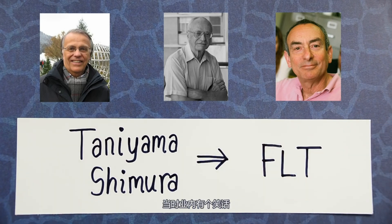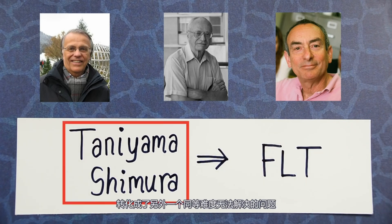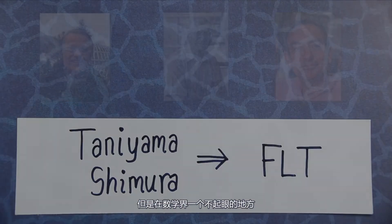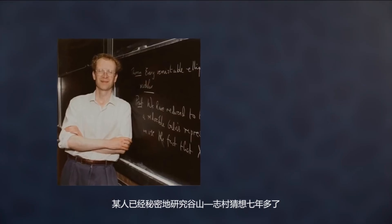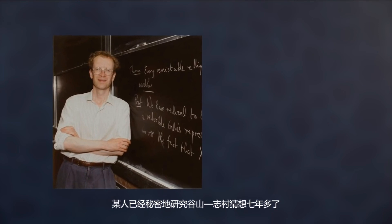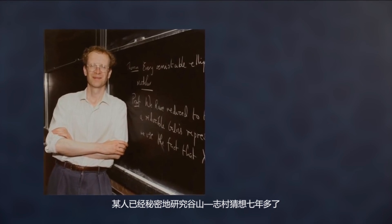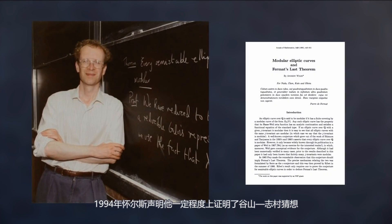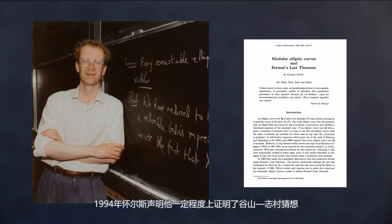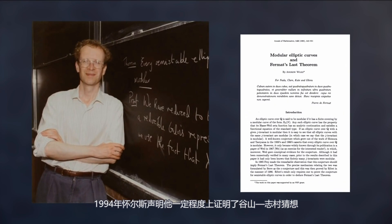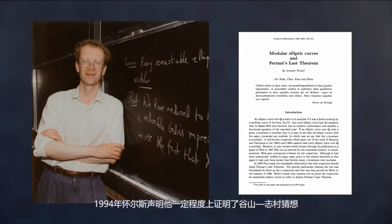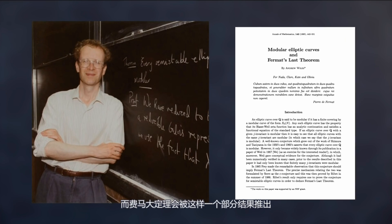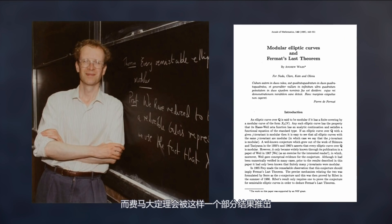There was a joke at the time that this was reducing one impossible problem to another equally impossible problem. But unbeknownst to the rest of the math world, somebody had been working in secret to prove the Taniyama-Shimura conjecture for seven years. And in September 1994, Andrew Wiles announced that he could prove enough of the Taniyama-Shimura conjecture that Fermat's Last Theorem would then follow.